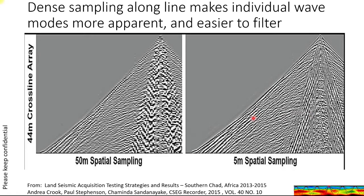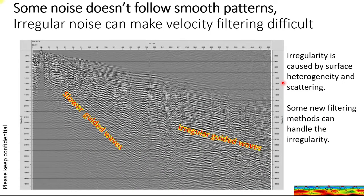Unfortunately, a lot of noise is not this smooth and easily removed with velocity filters. Here's some examples of guided waves that have a lot of irregularity. They have amplitude variations, they come and go, and you can see some irregularities. So velocity filters won't do very well. And if you use an aggressive velocity filter, you'll end up hitting some signal. There are some new filtering methods that can handle this irregularity, but this is one of the old problems with velocity filtering.